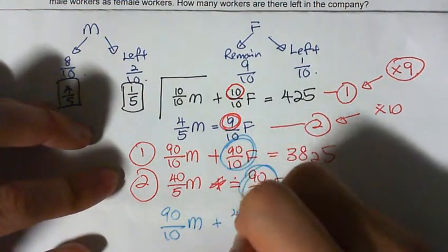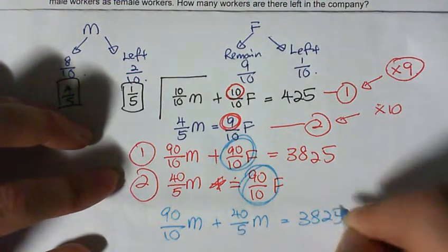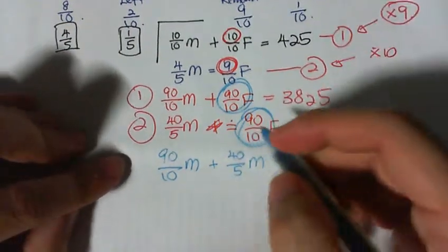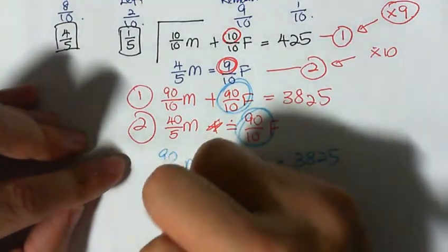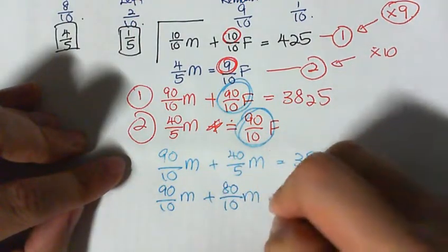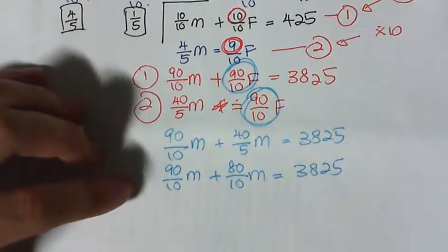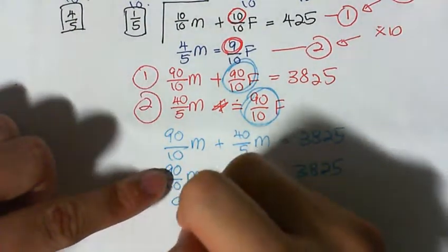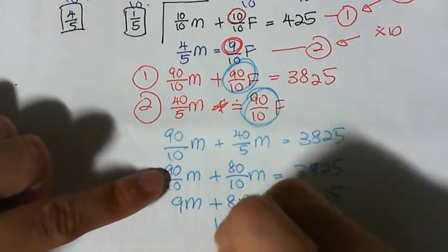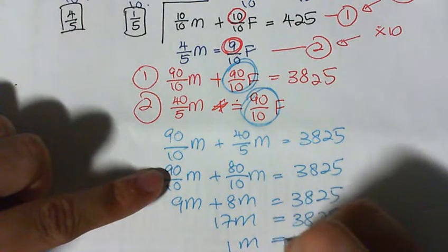Now I should have put this denominator 10 earlier so that's easier to calculate. So let's change it first, times 2, 80 over 10 male equals to 3825. Now some of you will have noticed by now, in actual fact, this is 9m plus 8m equals to 3825. 17m equals to 3825. 1m is 225.